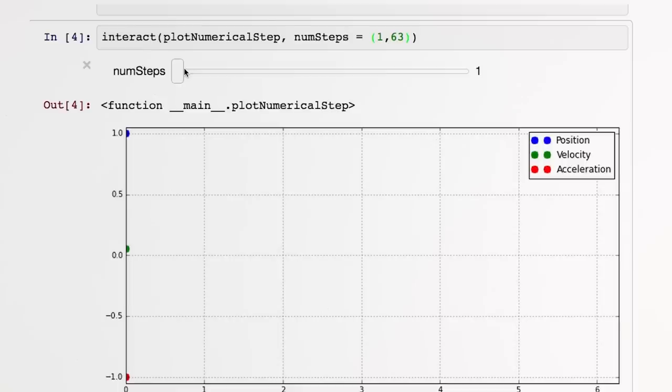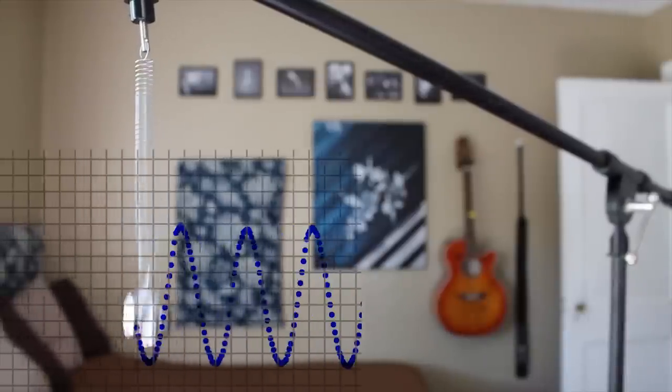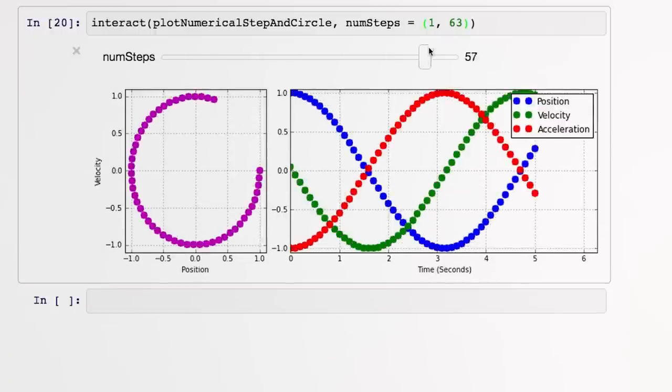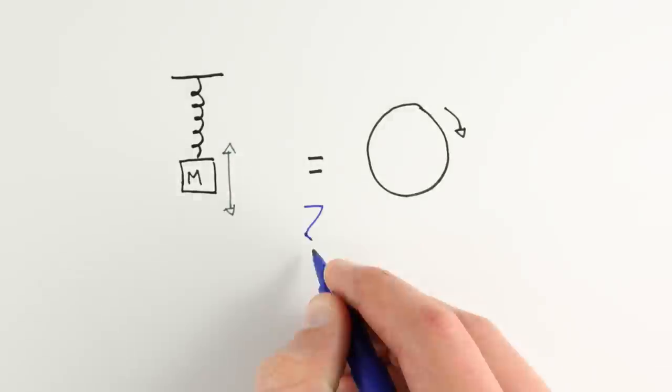This analysis resulted in a nice waveform that agreed well with experiment, and we even discovered that if we plotted position versus velocity, our motion traced a circle. We left off wondering what the connection could be between circles and a mass on a spring.